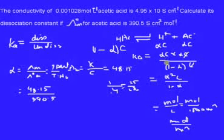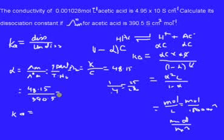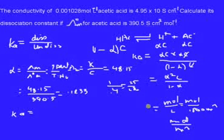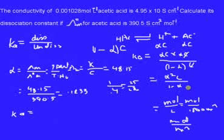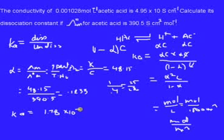Once we have the alpha value we can compute Ka. Dividing 48.15 by 390.5, we get alpha equal to 0.1233, which means 12.33% has dissociated. Squaring alpha, multiplying by the concentration C, and dividing by (1 − alpha) — that is, dividing by (1 − 0.1233) — we get the Ka value as 1.78 × 10⁻⁵ mol·L⁻¹.